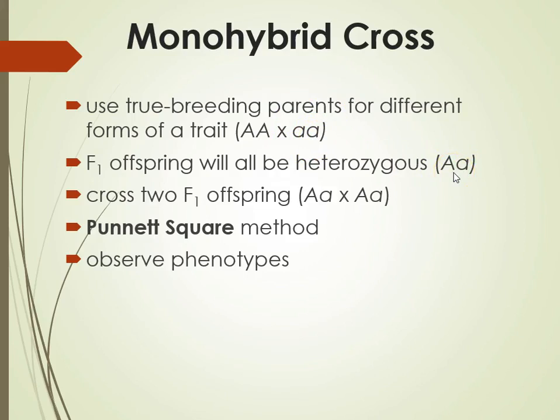So all the offspring will have one of each. Then what we often do is cross between the offspring of the F1 generation — heterozygous with heterozygous — to see what the outcome of the F2 generation will be. In order to do that and track the individual alleles, we use the Punnett square method.